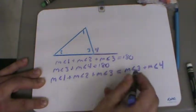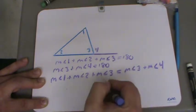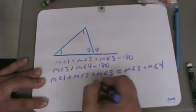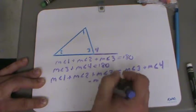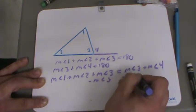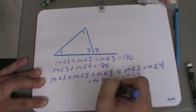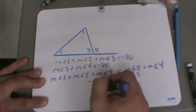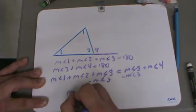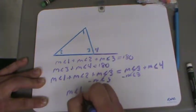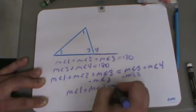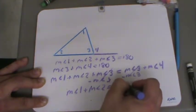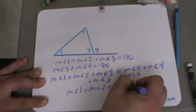Well, we have a common term here, so let's get rid of it. If I subtract the measure of angle 3 from both sides they'll cancel out, and I'll be left with the measure of angle 1 plus the measure of angle 2 is equal to the measure of angle 4.